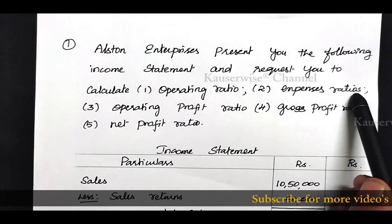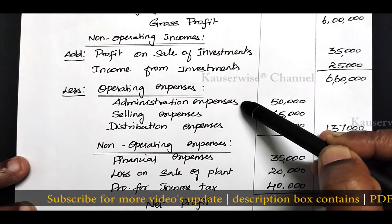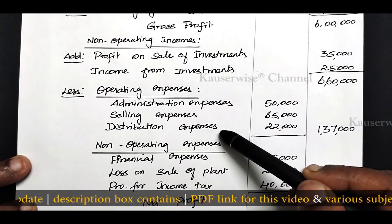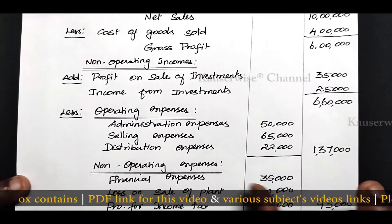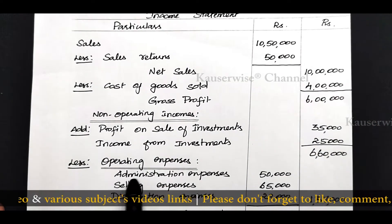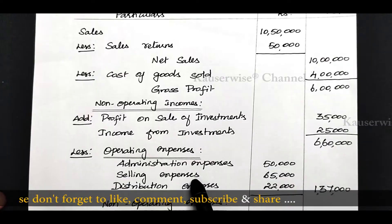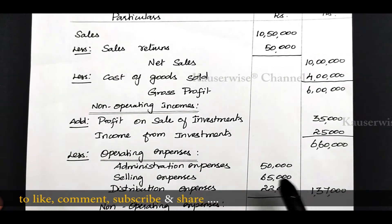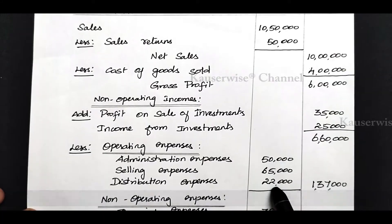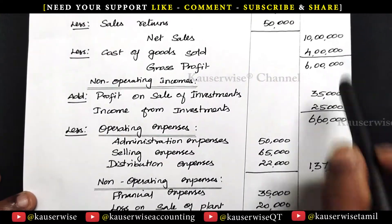The next one is expenses ratio. In this income statement we have different specific expenses: administrative expense, selling expense, distribution expense and financial expenses. For each specific expense, we need to find out the specific expense ratio by comparing each expense with net sales. Administrative expense 50,000 divided by 10 lakhs into 100; selling expense 65,000 divided by 10 lakhs into 100; distribution expense 22,000 divided by 10 lakhs into 100; financial expense 35,000 divided by 10 lakhs into 100.